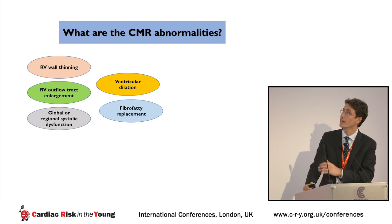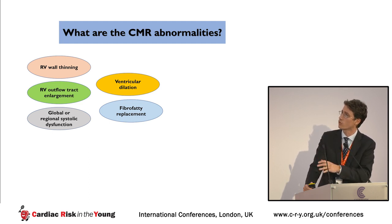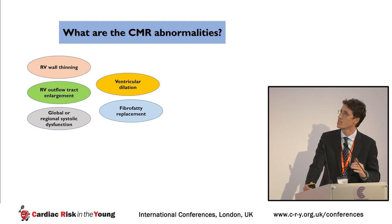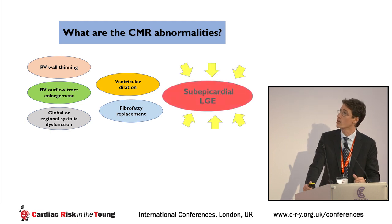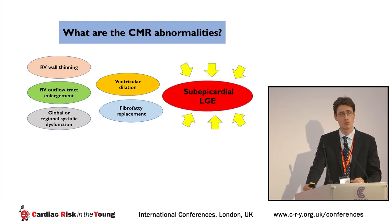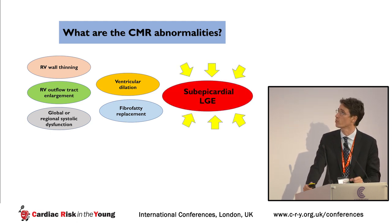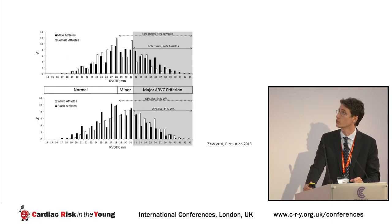The common CMR abnormalities include wall thinning, outflow tract enlargement, systolic dysfunction, and dilatation. But importantly, subepicardial late gadolinium enhancement is particularly relevant in this condition, as Michael previously showed.